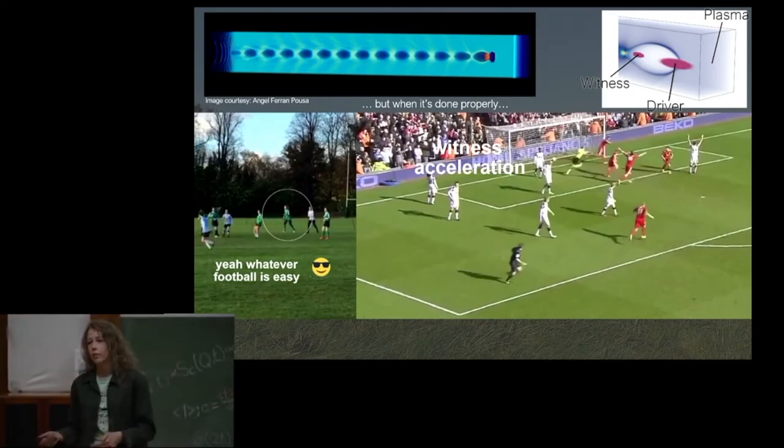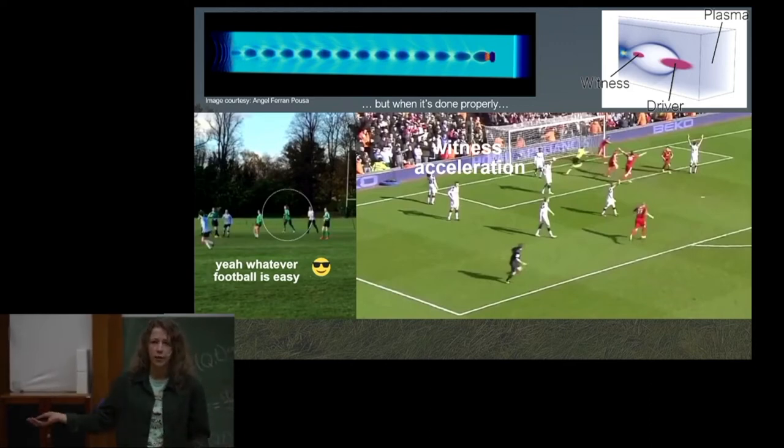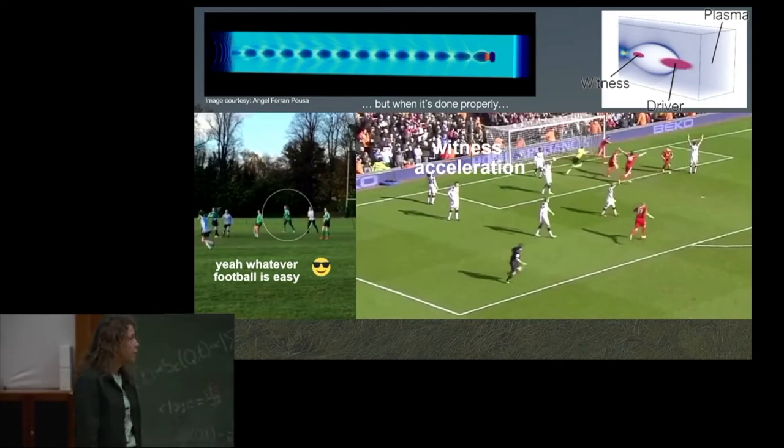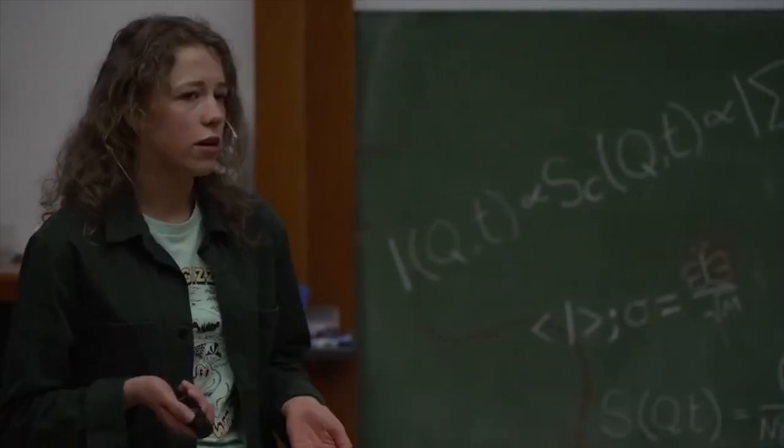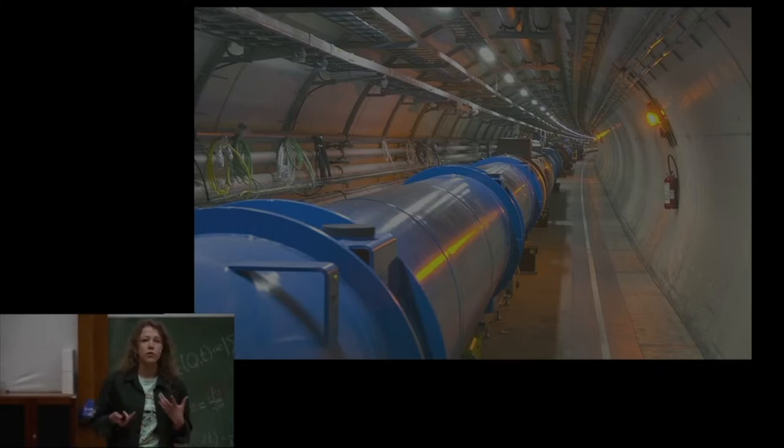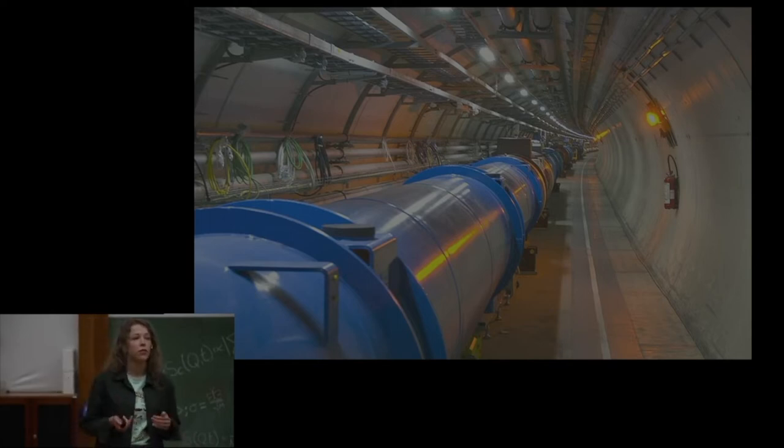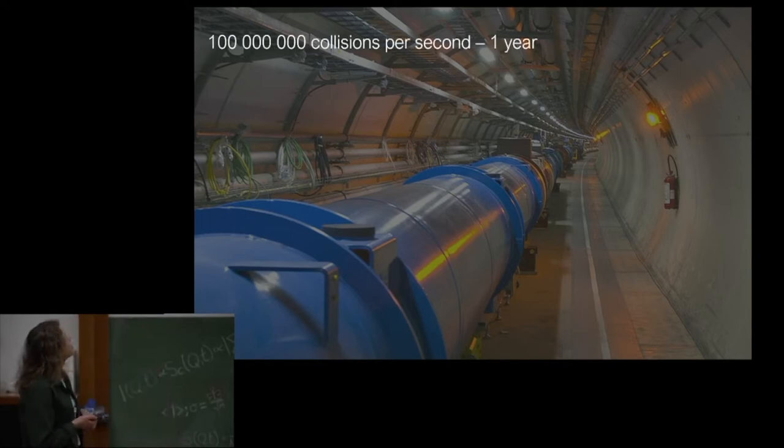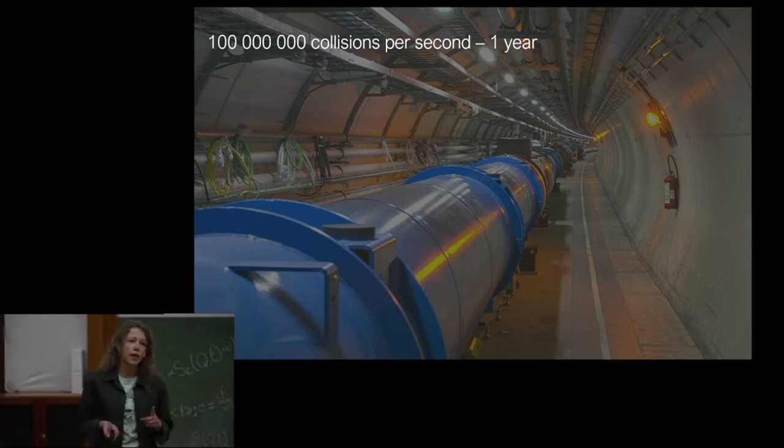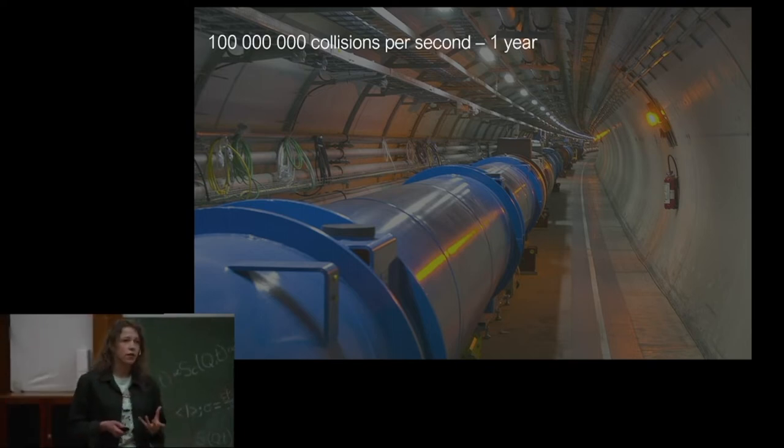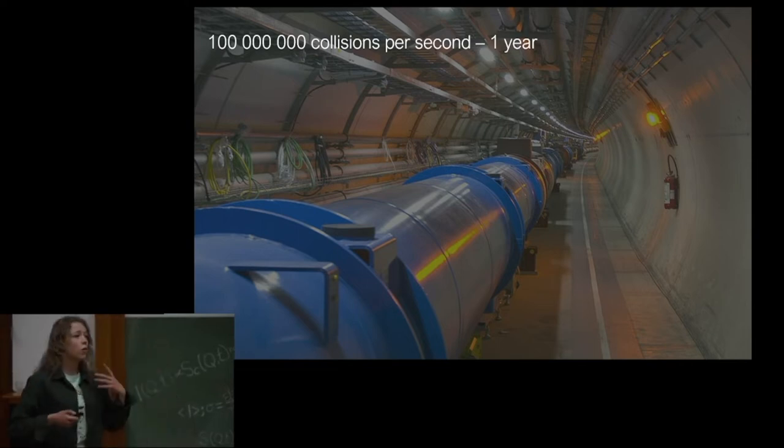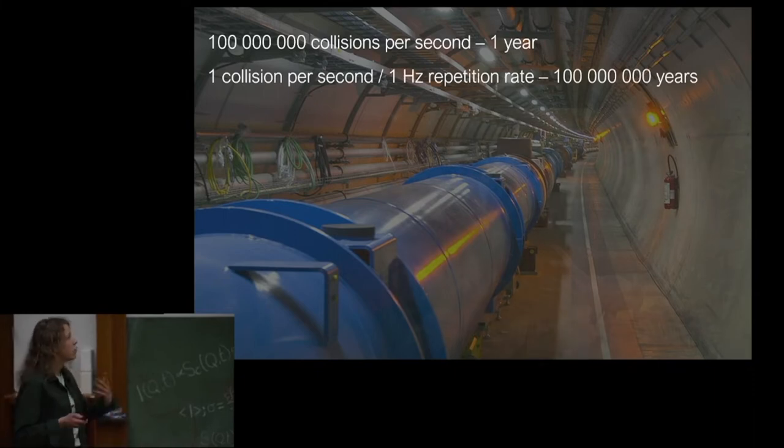Just because you accelerate electrons well doesn't mean anything. You need to accelerate them many times. And a good example of that is the Higgs discovery. So in 2012, when CERN announced the Higgs boson discovery, the Large Hadron Collider was operating at 100 million collisions per second. And it took them one year to announce the discovery since the start of data taking, approximately. So if we were to use plasma accelerators, which currently operate at 1 hertz, so one repetition, one collision per second, we would need 100 million years to discover Higgs. So we should have started a little earlier.